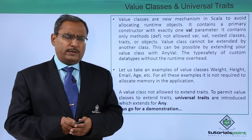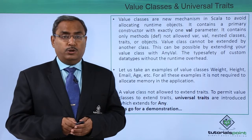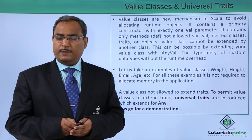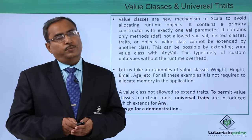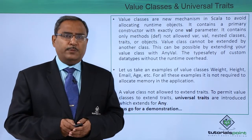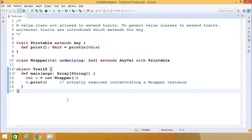Let me go through a sample coding example for better understanding. We will explain line by line, run the code to get the output. A value class is not allowed to extend traits; to permit this, universal traits are introduced which extend Any.